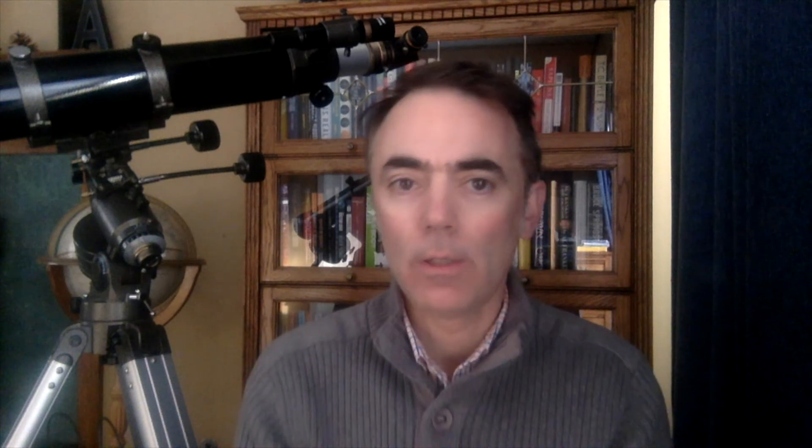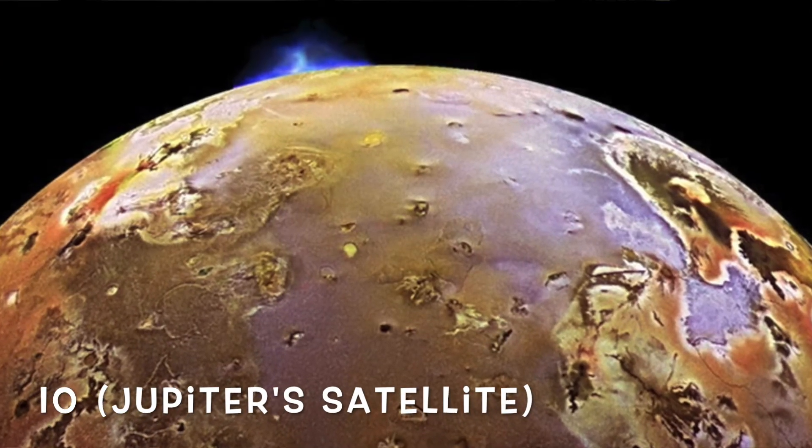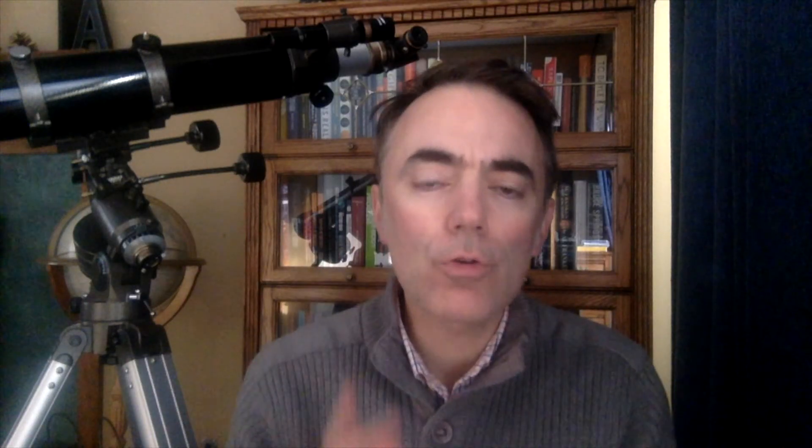Tidal forces are important astronomically speaking. For example, if there are fluids inside a planet or a satellite and that planet or satellite is close to the gravitational field of another astronomical object, tidal forces can affect those internal fluids and by moving them hit the inside of the planet or satellite. This happens, for example, in Jupiter's Moon Io. It also happens to the Earth that, due to the tidal forces, friction is slowing down the spinning of the Earth.